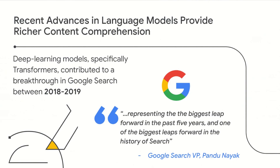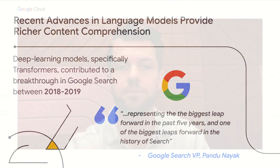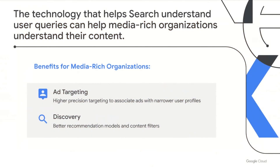Deep learning has given us richer content comprehension. And in the case of Google search, there was a big breakthrough with a type of model called the transformer. This represented one of the biggest leaps forward in the history of search. And the technology that helps search understand user queries can also help media-rich organizations understand their content. For advertising, organizations need precision targeting to associate ads with a narrower user profile. And for content discovery, recommendation models and content filters are key. Given the massive amount of content generated every day, it's imperative to identify the most relevant trends in news stories and articles.